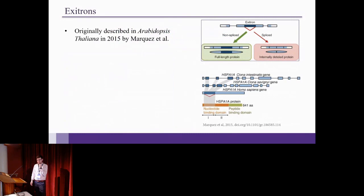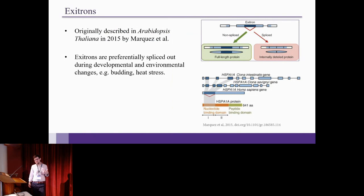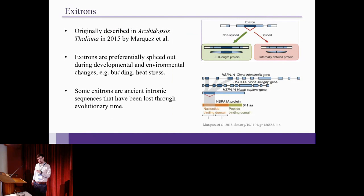So exotrons were originally described in Arabidopsis thaliana in 2015, and this is maybe one of the reasons that it hasn't really been taken up by people who study human transcriptomes. They were shown that exotrons are preferentially spliced out during development and environmental changes like heat stress and budding. And something really interesting they found was that some of these exotrons are basically ancient intronic sequences that have been lost through evolutionary time, and that's why the splice sites are kind of weak splice sites, because they used to be very strong splice sites but then for some reason they've been lost over time. And then in some circumstances they can be reactivated.